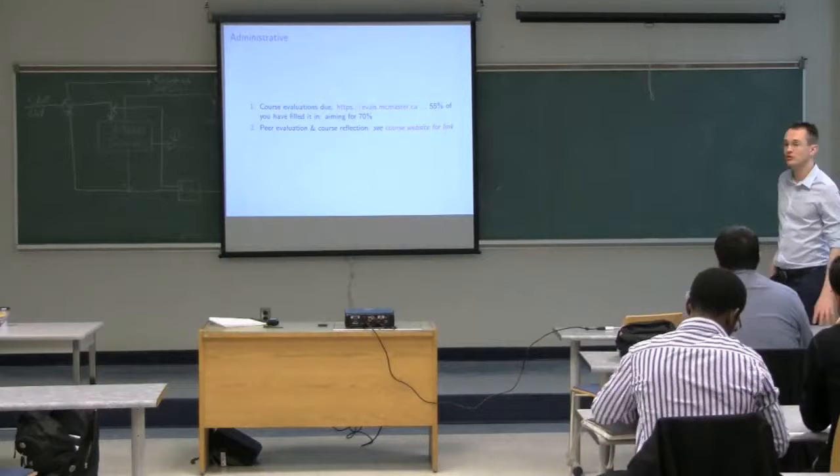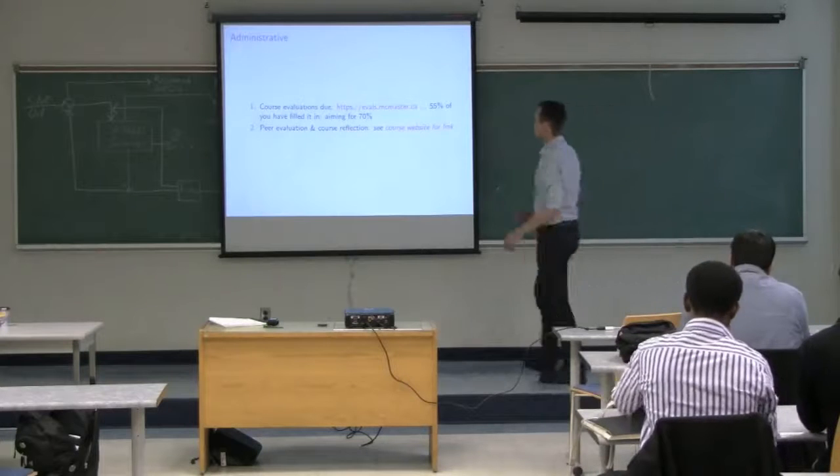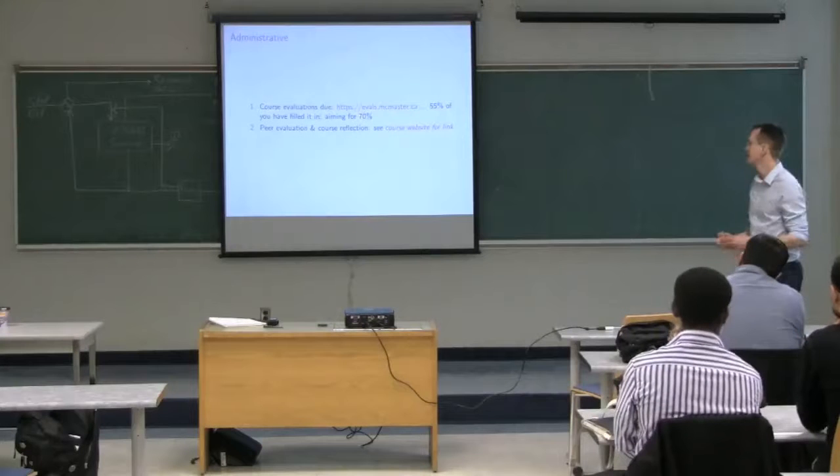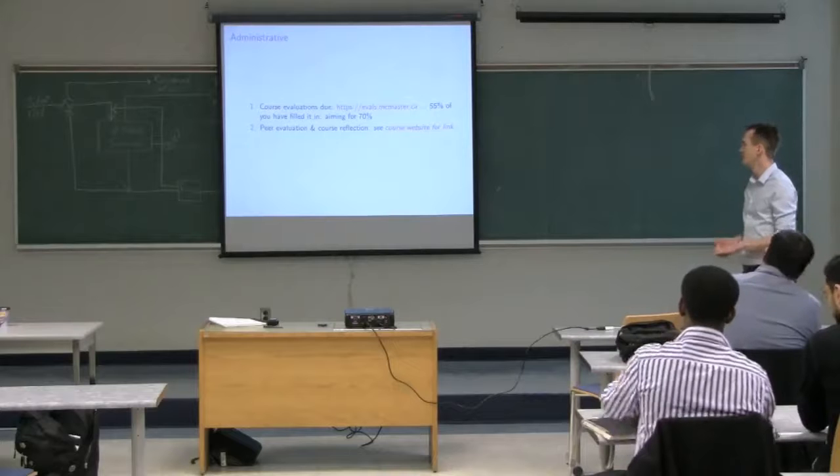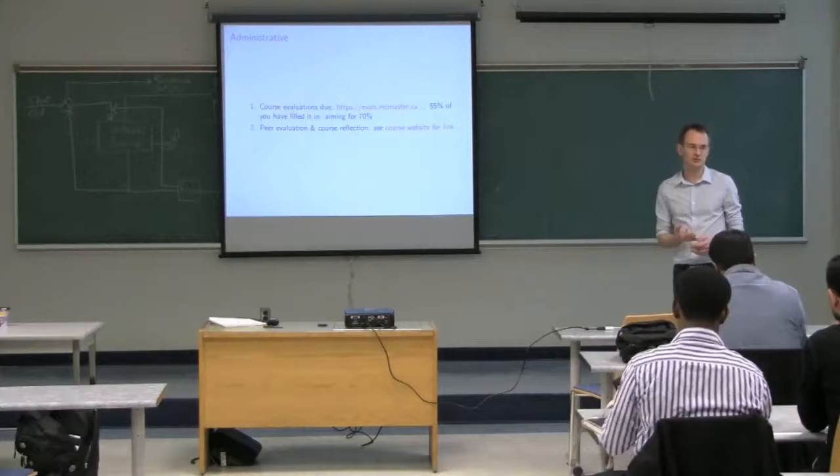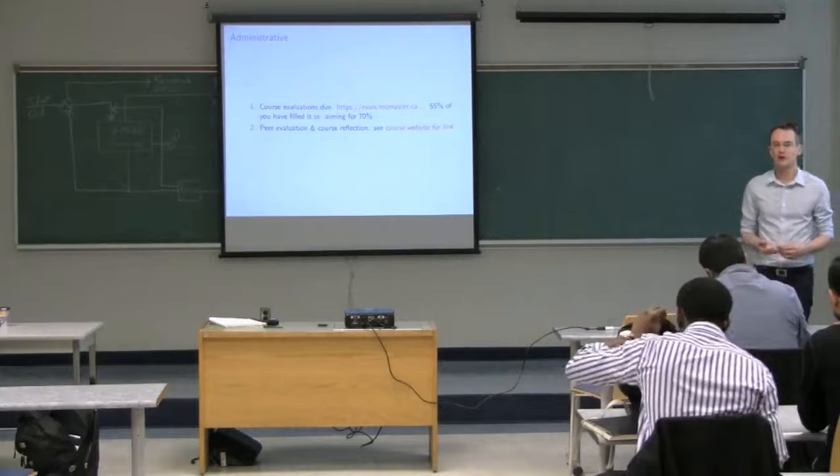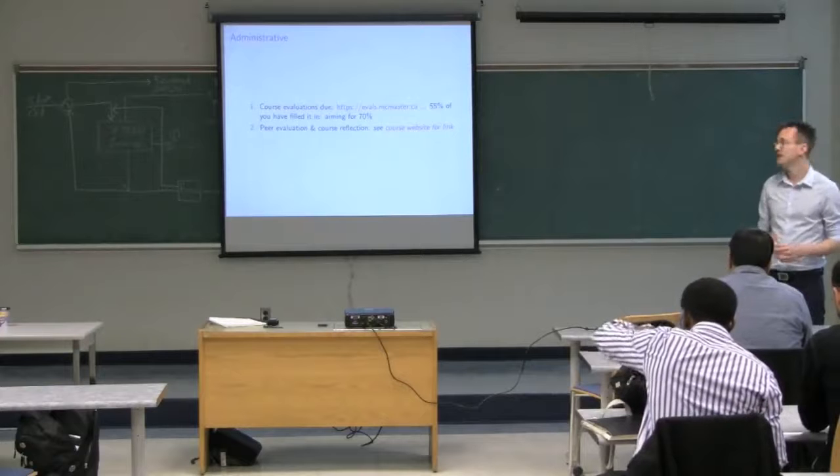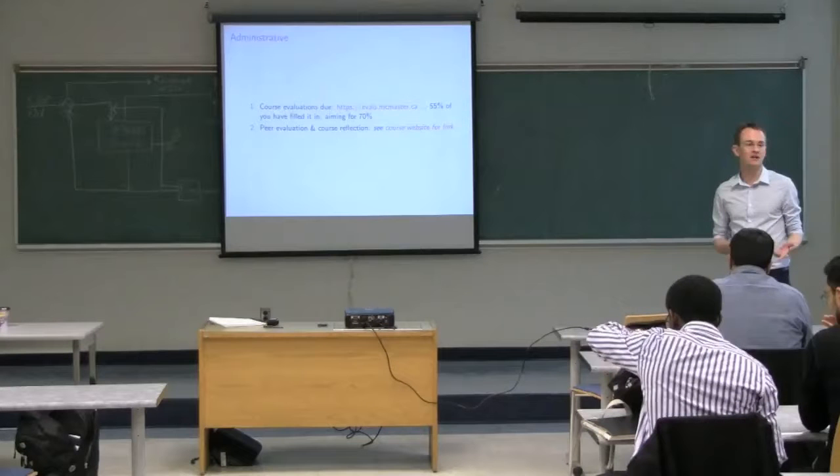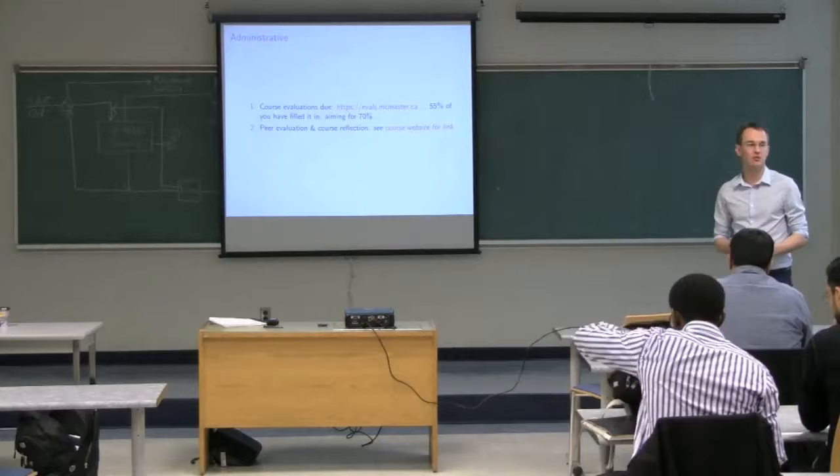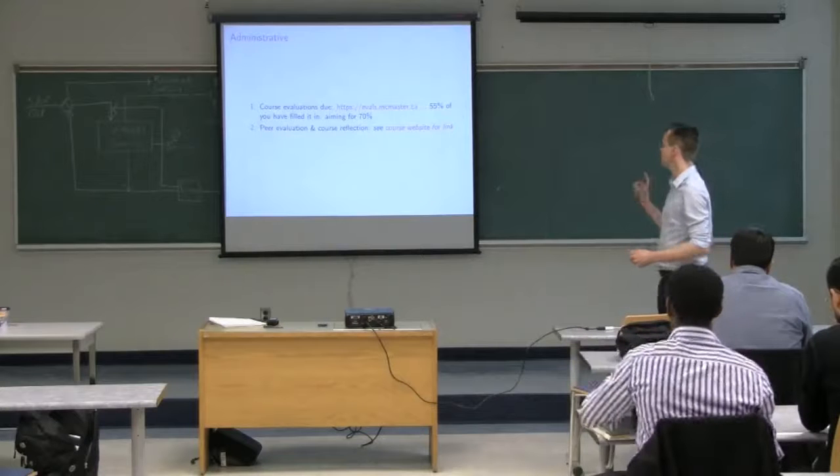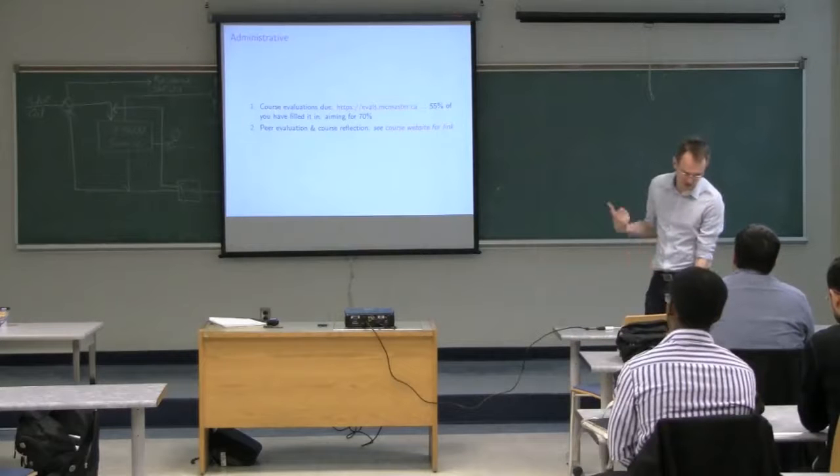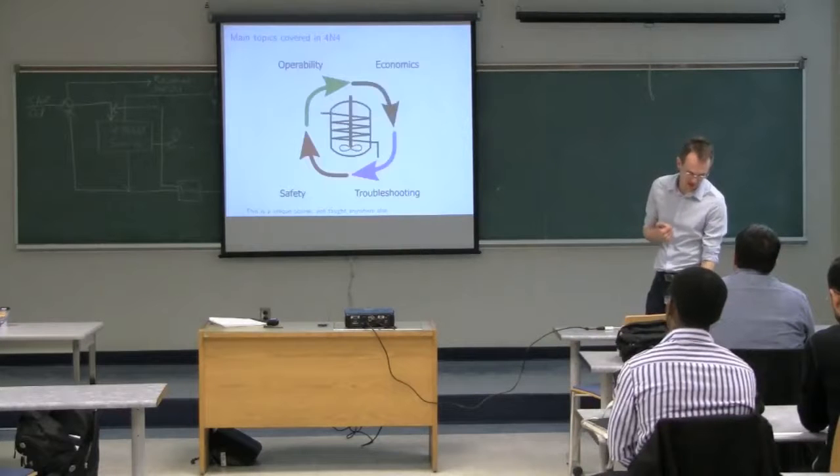Then also on the course website, there's a link for peer evaluation course reflection. Many of you have already done that. If you have not, let me just quickly explain. It's a three-part form that you fill out. One is on the course reflection where you reflect on what you've learned over the past three months here at 4N. You also evaluate your peers for the project's work. And then the last part is just letting me know of any improvements you'd like to see in this course for future years. So far, about 50 out of 90 students in the class have filled out that reflection. So I'll just quickly talk about what I have seen so far in a minute.